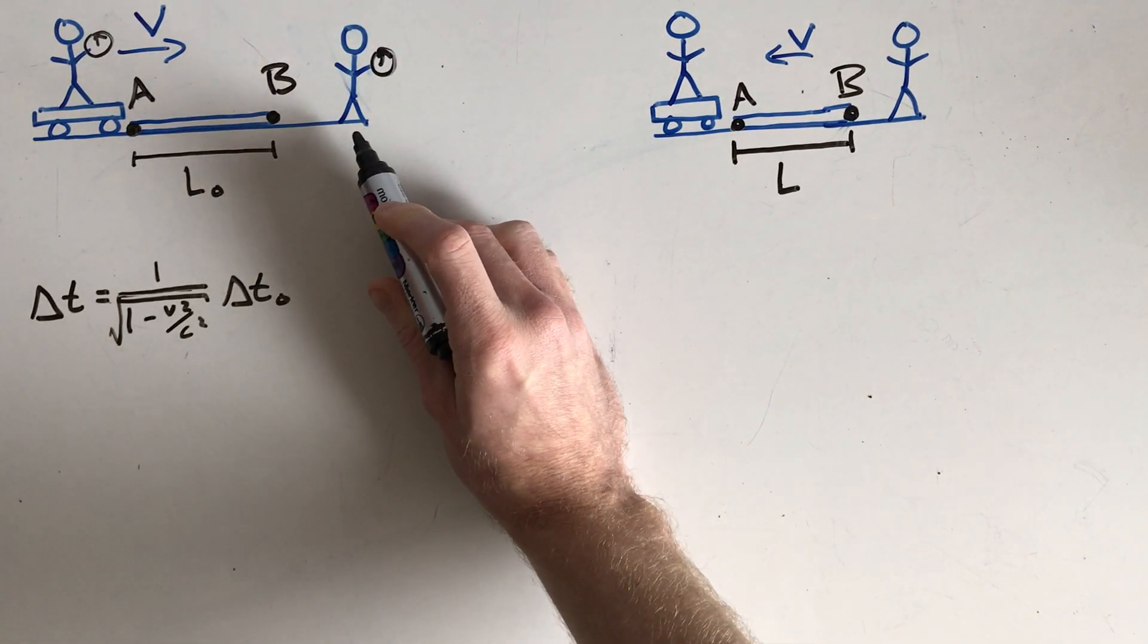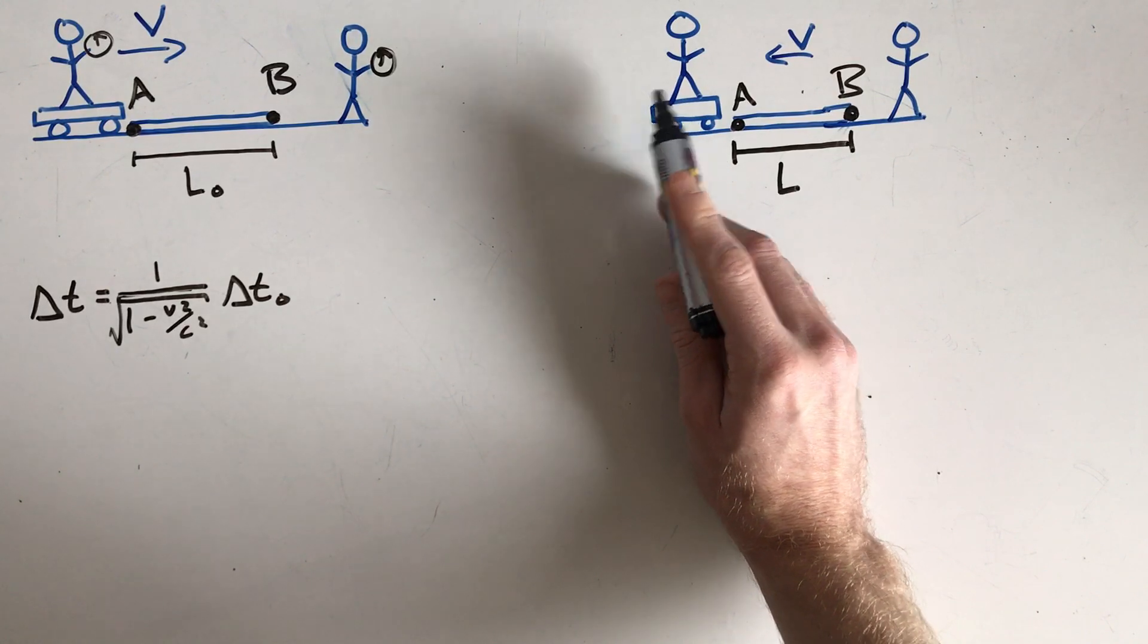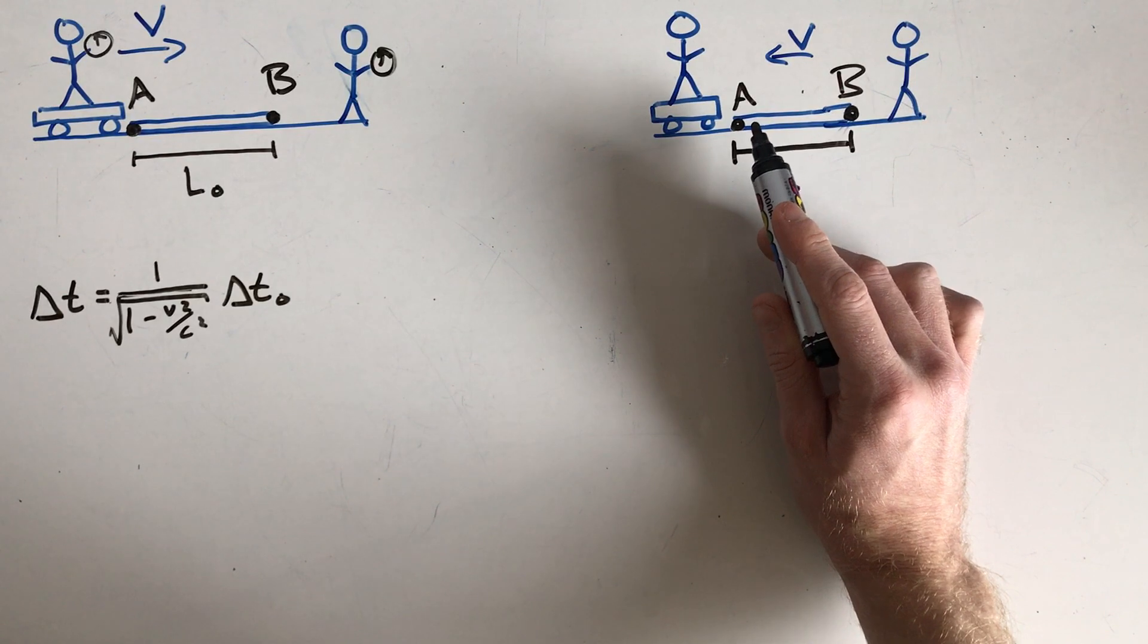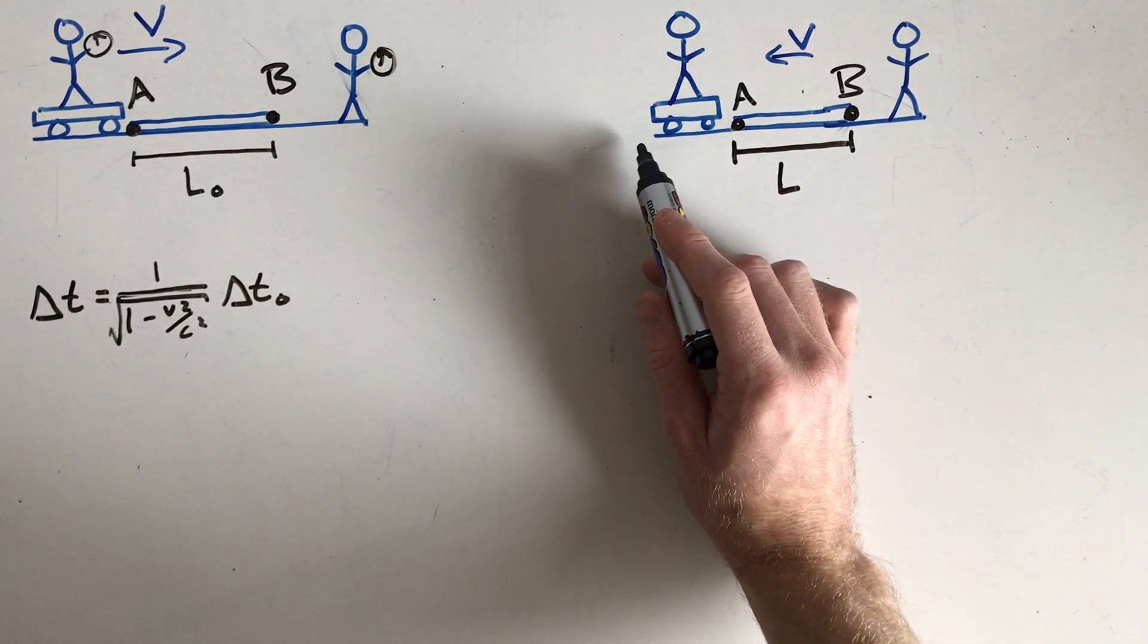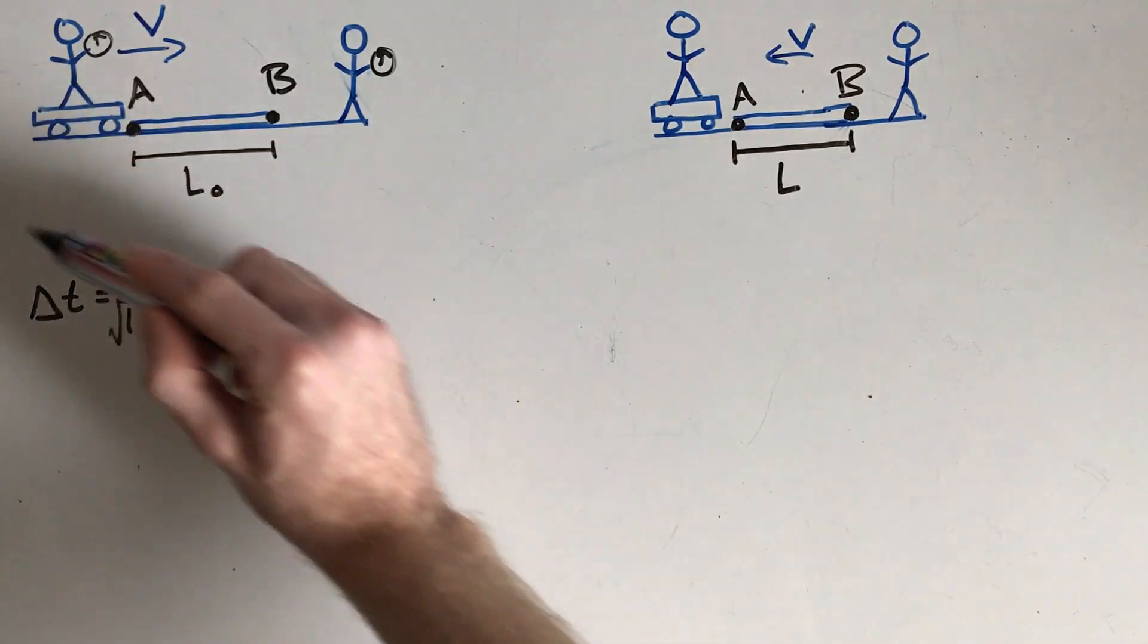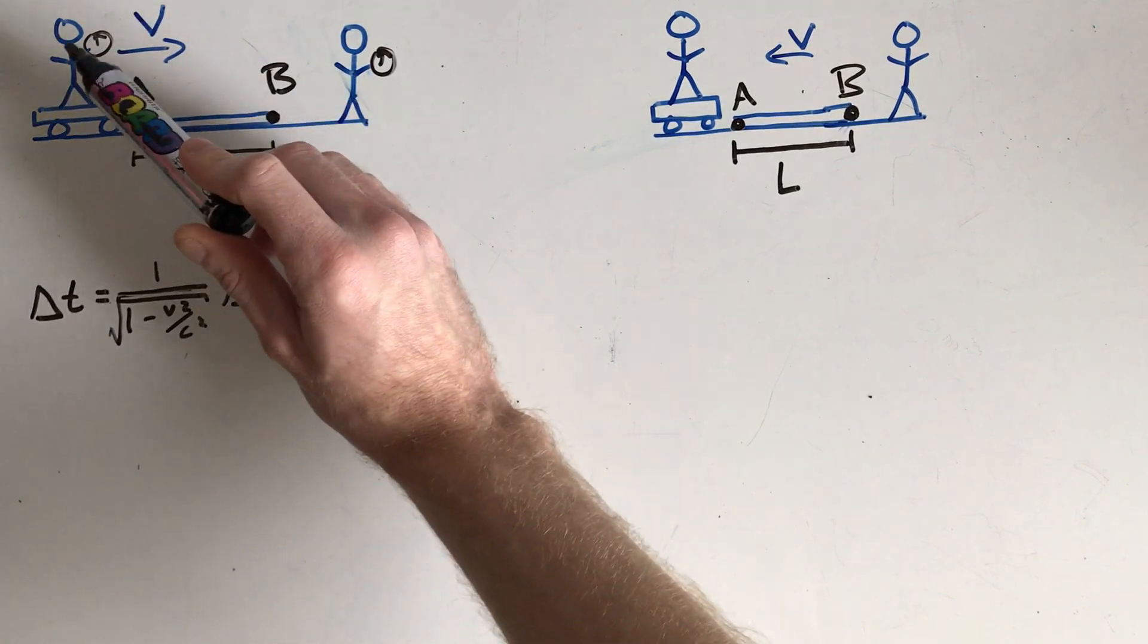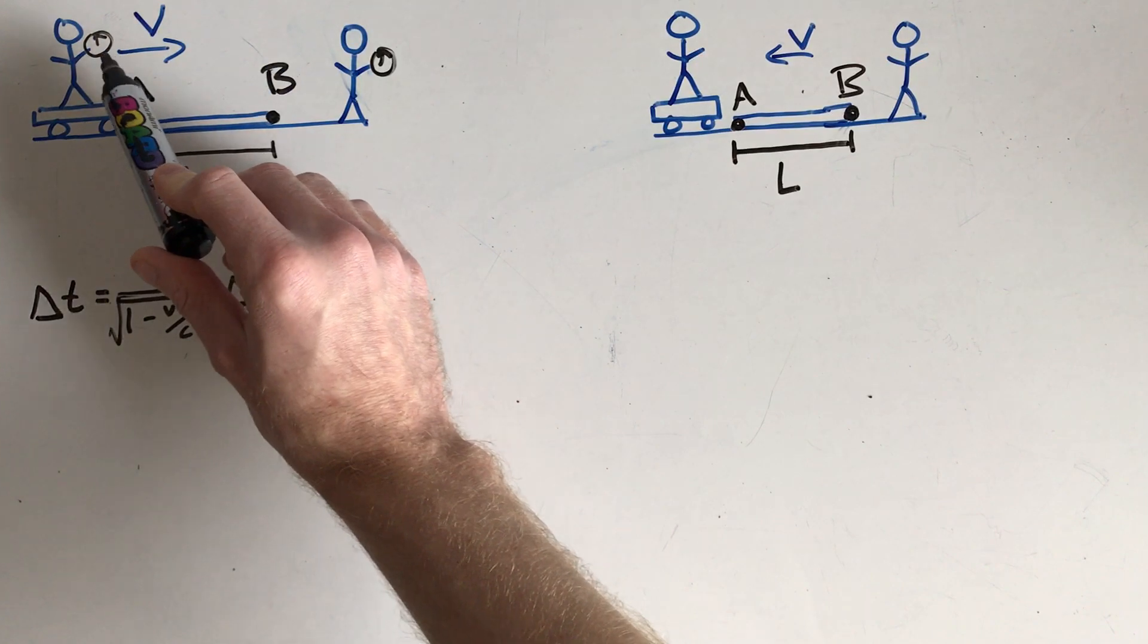But if we think about it from this person's reference frame, that would be over here, they are actually at rest. And what's actually happening is the rod and this other observer are moving past them. Now we already know from the last video that in this situation, if we use time dilation, this clock is moving with respect to this observer. So this person, if they measure...